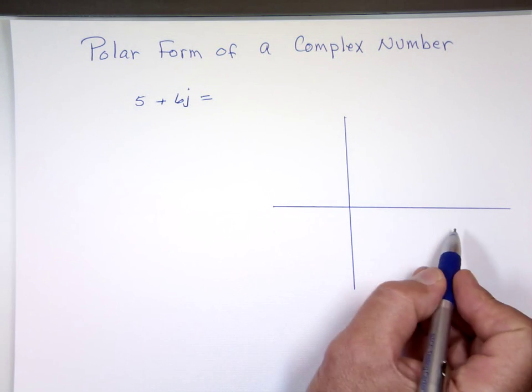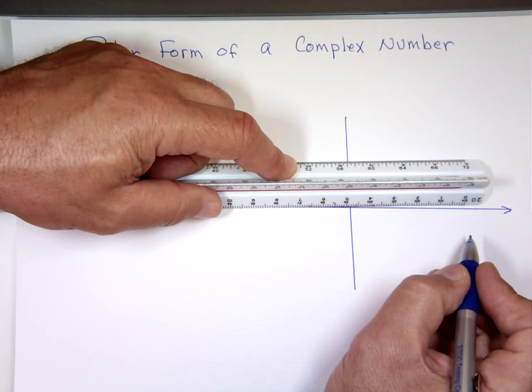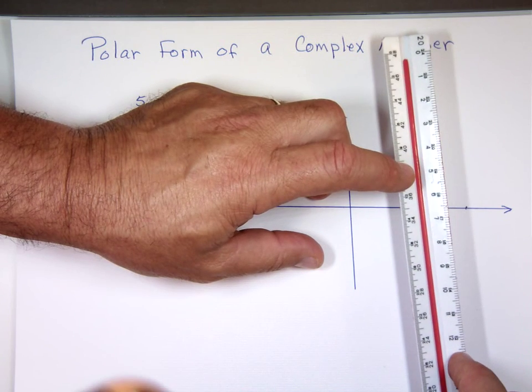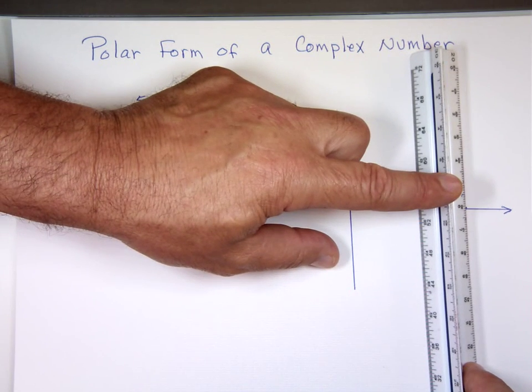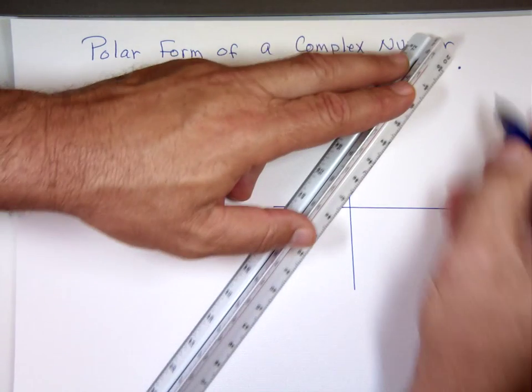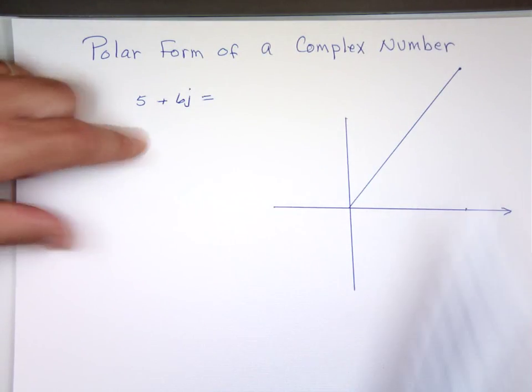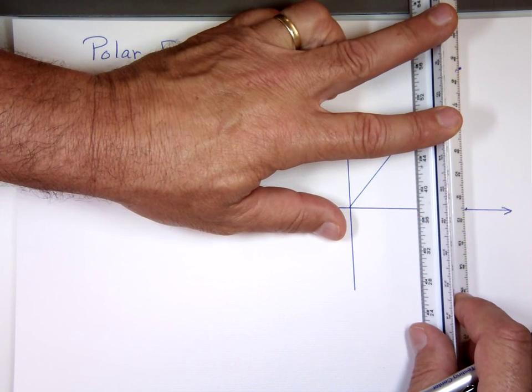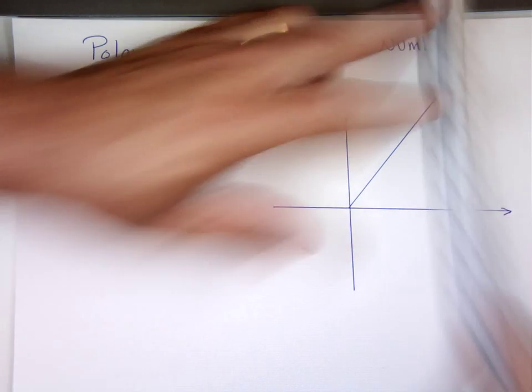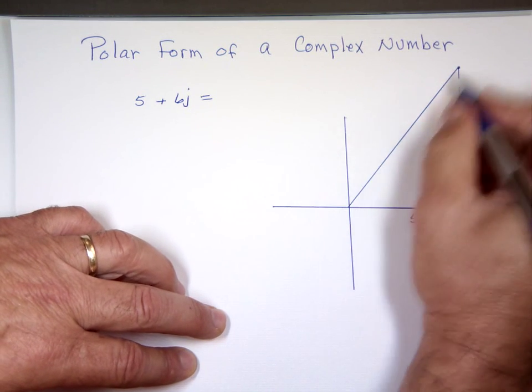You go 5 to the right and 6 up, right? Let's go 5 to the right. That puts me right here. And let's go 6 up. That puts me right here. This is the vector. This is the 5, and that's the 6j. 5 plus 6j gives you that vector.